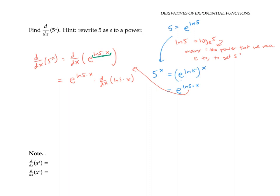ln five is just a constant, so the derivative of a constant times x is just the constant. Now, e to the ln five times x is the same thing as e to the ln five, raised to the x power — by exponent rules, taking a power to a power means multiplying the exponents. And e to the ln five is just a fancy way of writing five. So the derivative with respect to x of five to the x is five to the x times ln five.